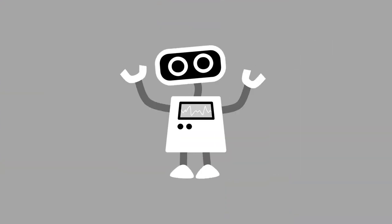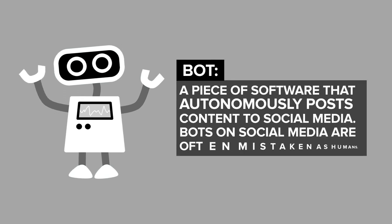A bot is simply a little piece of software that, unlike a human, can send messages out really really fast to lots and lots of people — much faster than people can — and since it's software, it doesn't have to sleep, so it can operate 24-7.